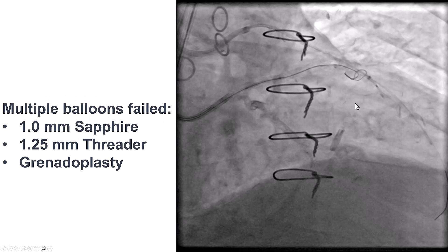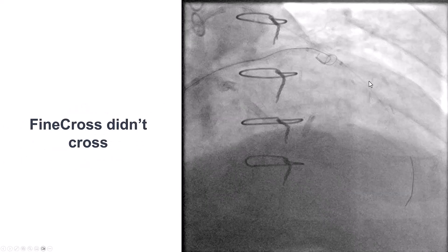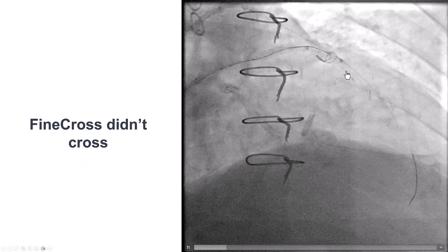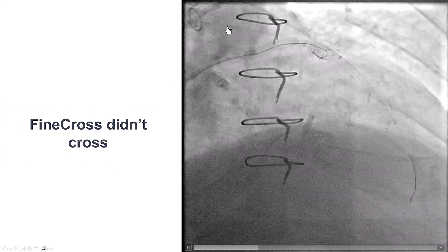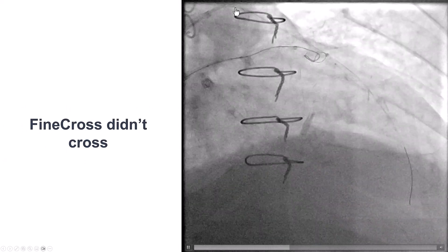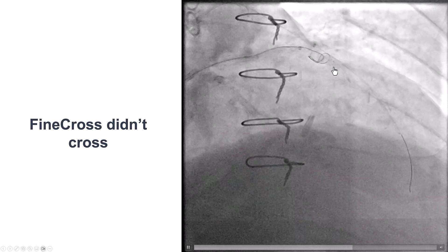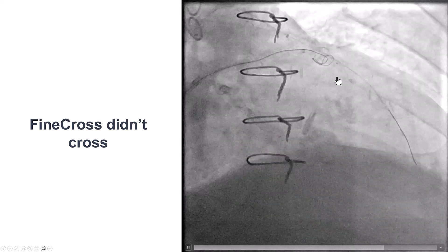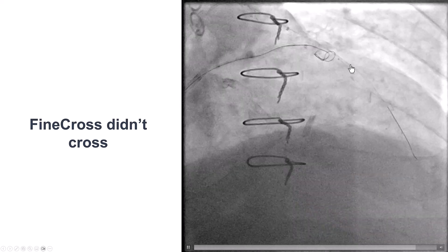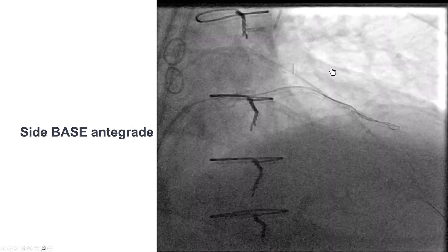We now had a microcatheter uncrossable CTO. We tried different things — small balloons: 1.0 Sapphire, 1.25 millimeter Threader. We even inflated the balloons until they ruptured, but it didn't work. We had good support with a guide extension in the retrograde guide, but even when we used a different microcatheter — a Finecross — we just could not get through this area.